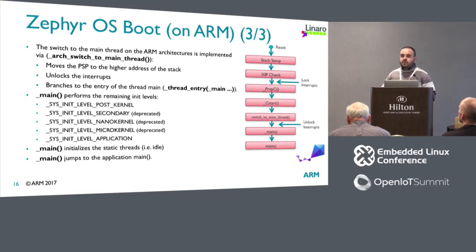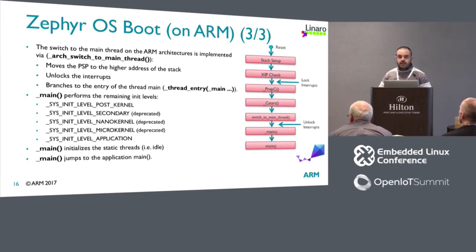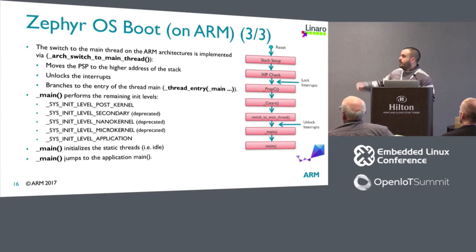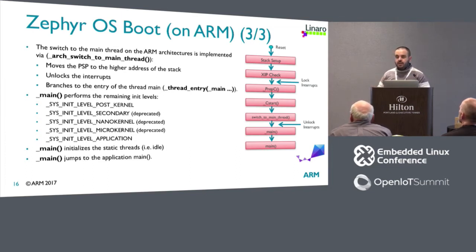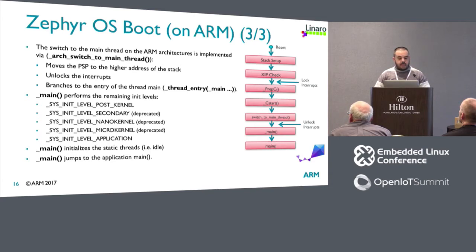_main does the second part of kernel initialization. If we have an idle-level feature, we can initialize it here. Or if we have functionality that takes advantage of what was initialized in kernel 1 and kernel 2, we initialize it here. Note that some features here are deprecated because they belong to the nano kernel and micro kernel being rewritten into the unified kernel — the variant we use now in Zephyr. Once complete, _main initializes static threads like idle, and jumps to main — the main of our application — at which point the firmware does what we have designed it to do.